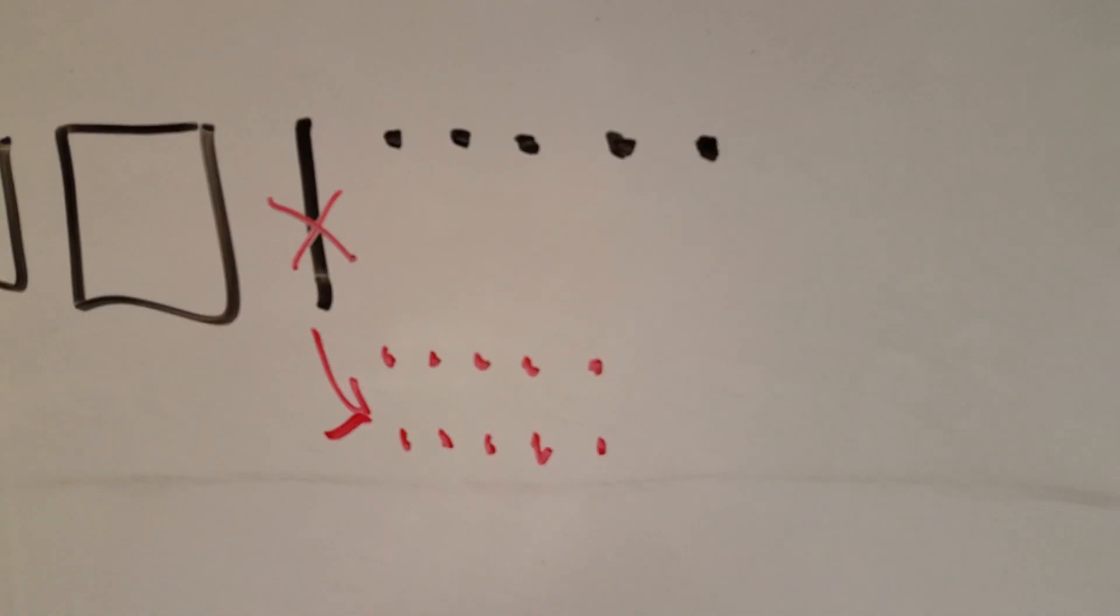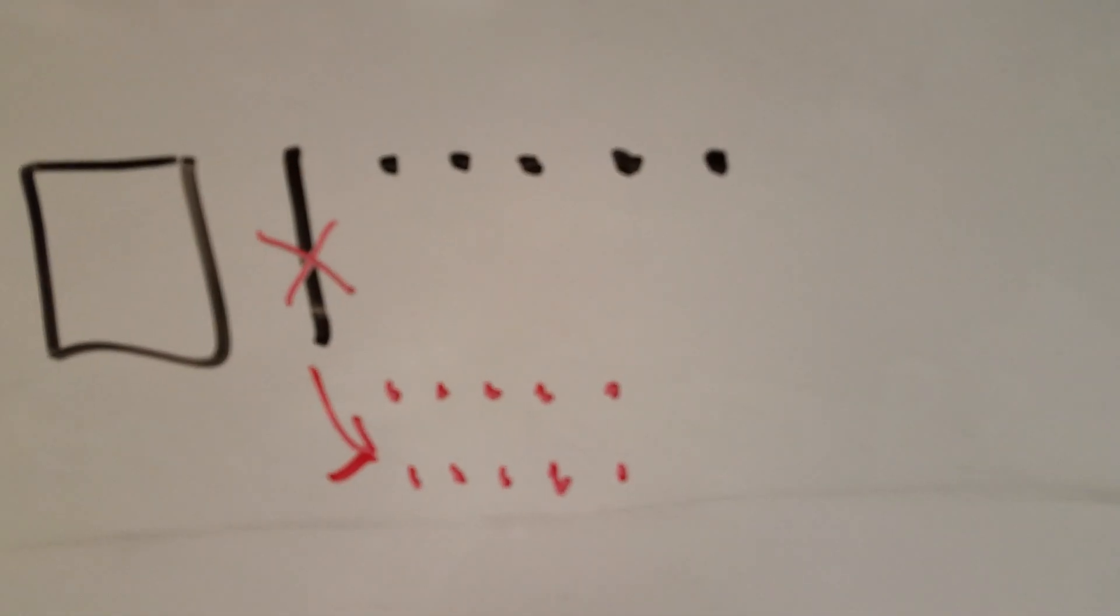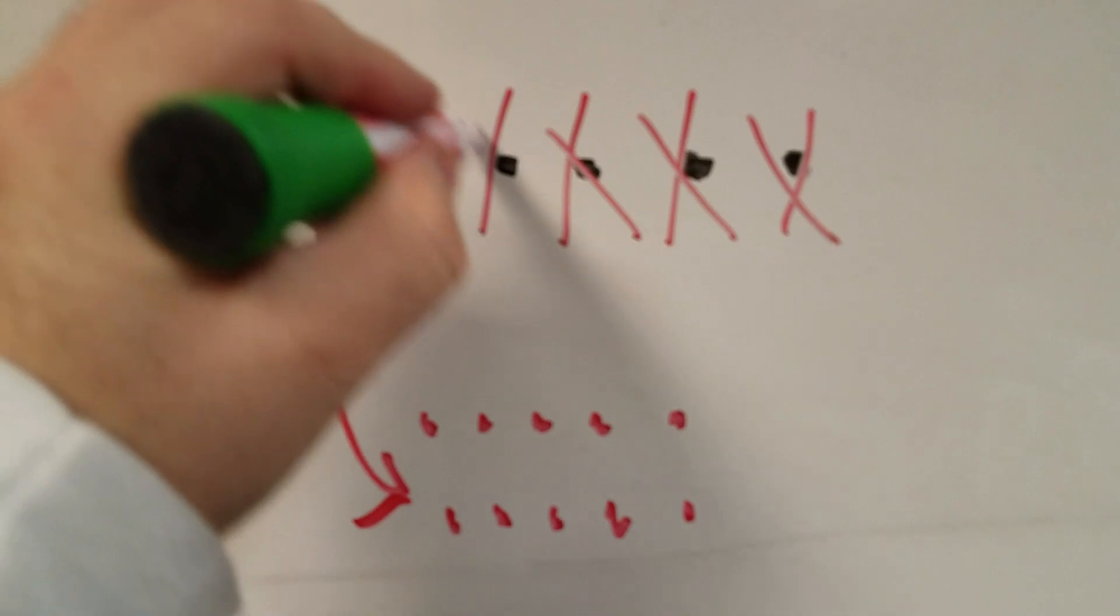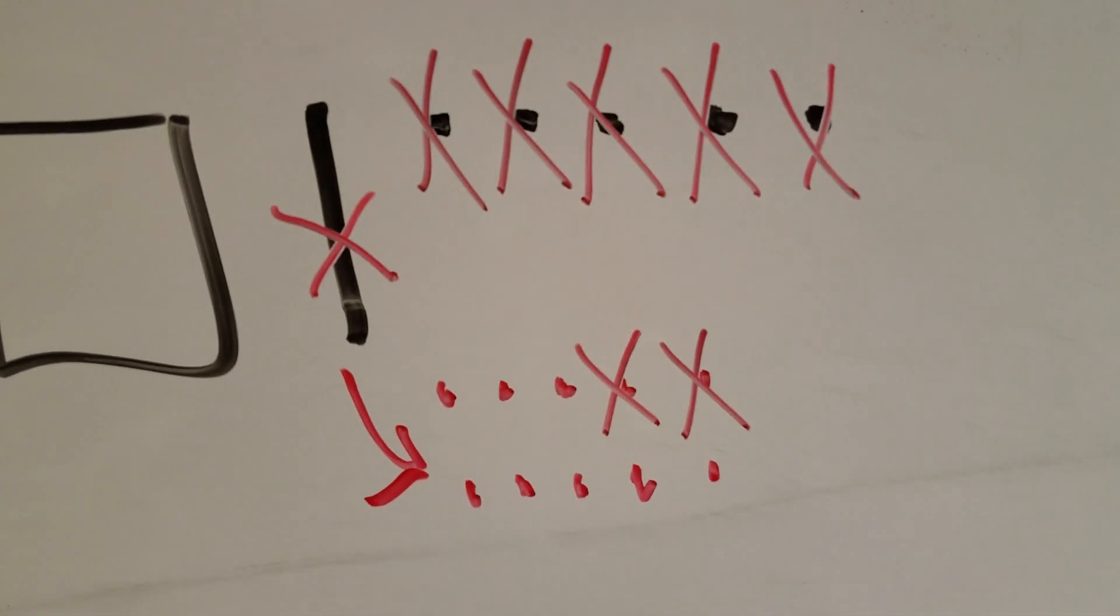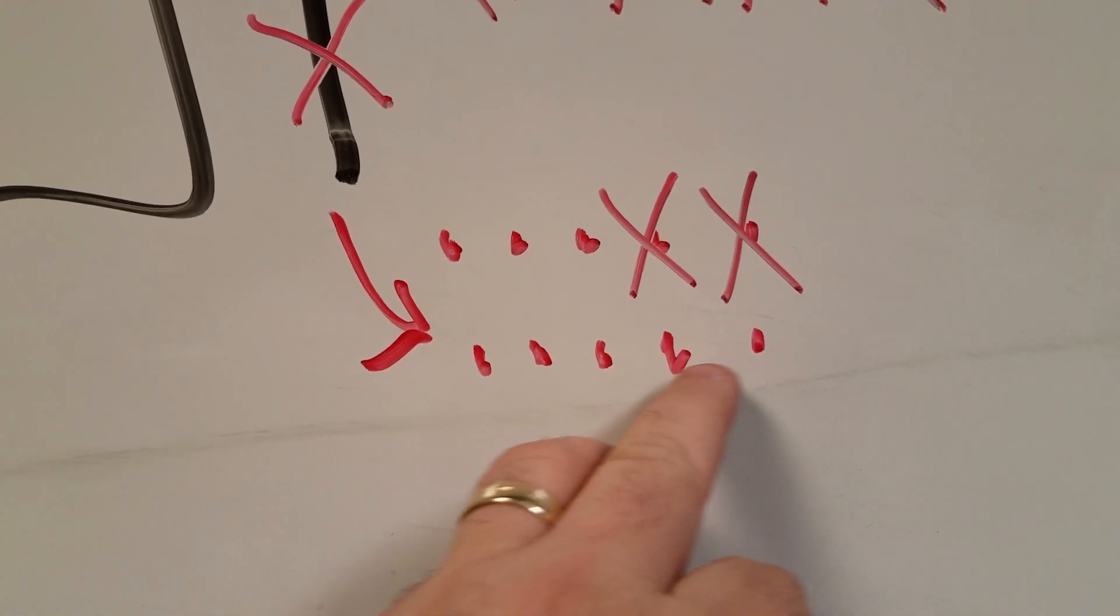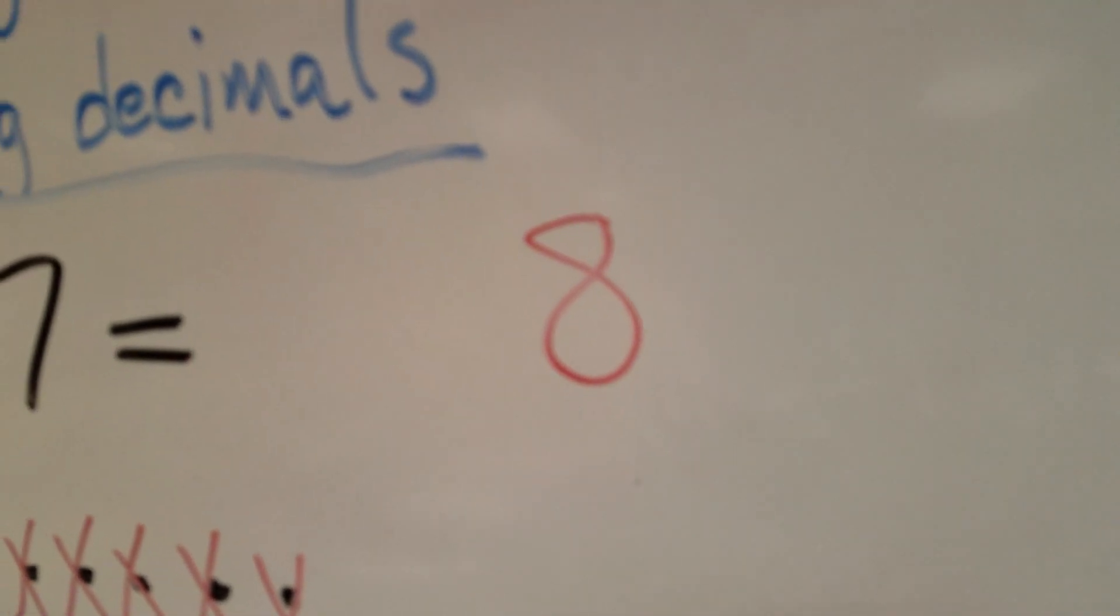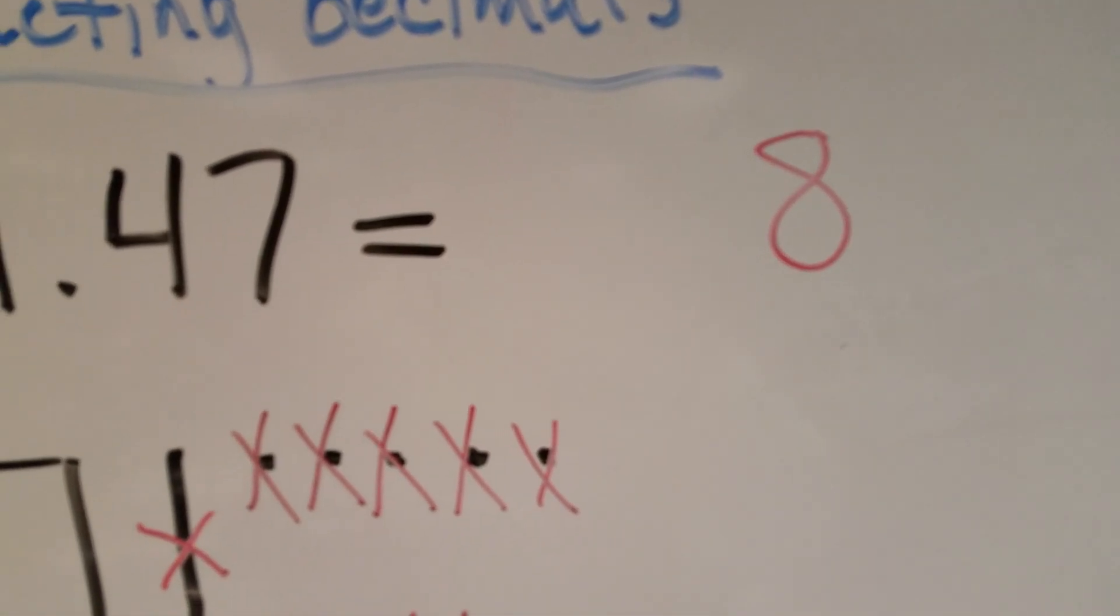So now that I have the hundredths broken up I can go ahead and take seven away from it. So I'm going to just go one, two, three, four, five and I'm going to choose these two, six, seven. So I have left one, two, three, four, five, six, seven, eight. I have eight hundredths left so that is the end piece of my problem.